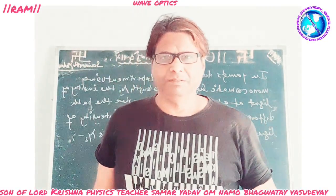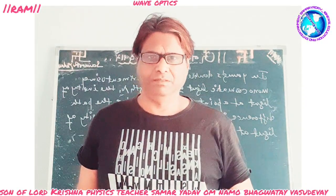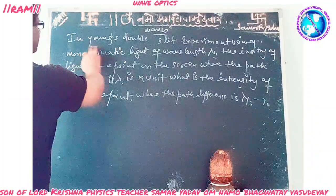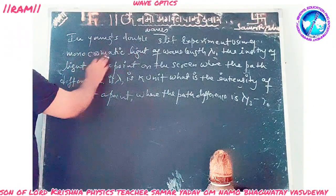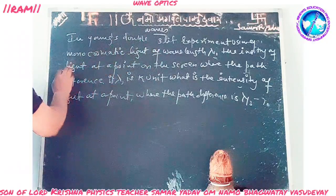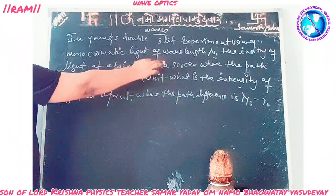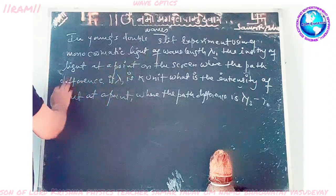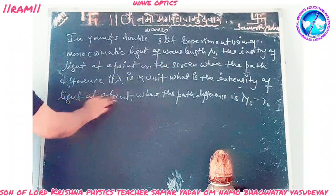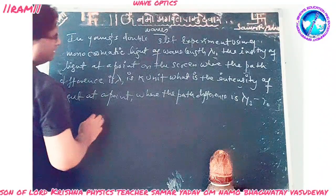Today in wave optics, we will solve a numerical. In Young's double slit experiment using monochromatic light of wavelength lambda, the intensity of light at a point on the screen where the path difference is lambda is K. What is the intensity of light at a point where the path difference is lambda by 3?